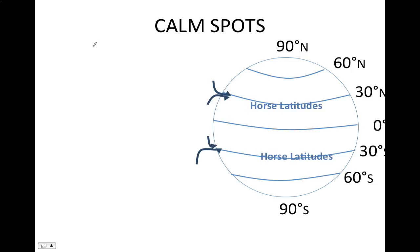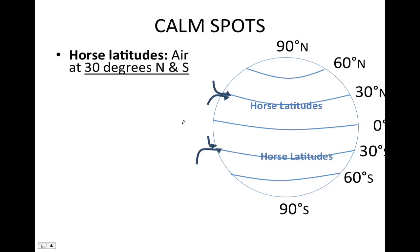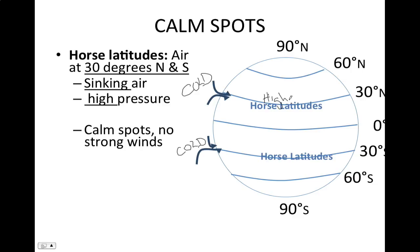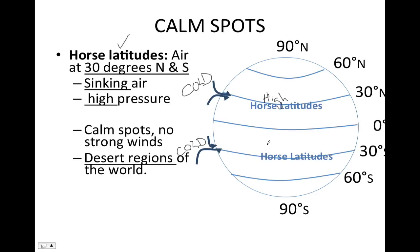Another area without a lot of surface wind is at 30 degrees north and 30 degrees south. This air is constantly sinking because it's cold in the upper atmosphere. This constant sinking of air creates a high pressure area at 30 degrees north and south, and we call this region the horse latitudes. When this air sinks, it actually heats up a little bit because the particles are being compressed and their energy increases. This air is also very, very dry. Since this pressure system rarely leaves 30 degrees north and south, we have hot, dry conditions there, creating our deserts.